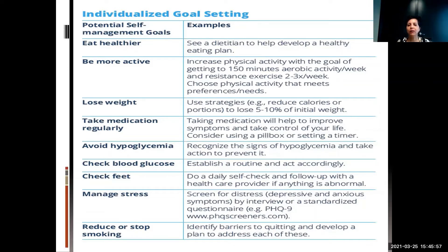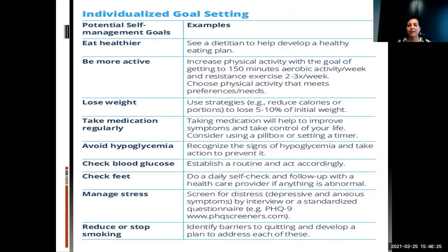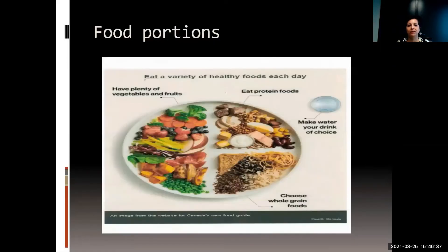Try to avoid hypoglycemia by recognizing the signs. If family members suggest you seem a little off, check your blood sugar or drink some orange juice. Remember to check your blood sugar, check your feet daily, and learn to manage your stress. When we ask how you're doing, we expect honest introspection. Finally, identify barriers that will help you quit or decrease smoking.